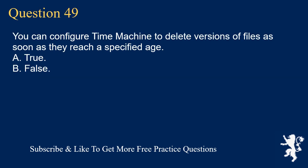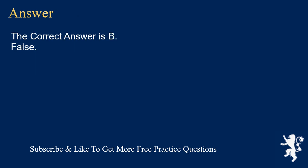Question 49. You can configure Time Machine to delete versions of files as soon as they reach a specified age. A. True. B. False. The correct answer is B: False.